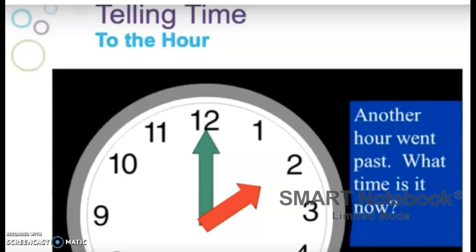Okay, another hour went by. So what time is it now? Go ahead and say it. You are correct. The hour hand, which is the red one, is now pointing to the two. So it is two o'clock.